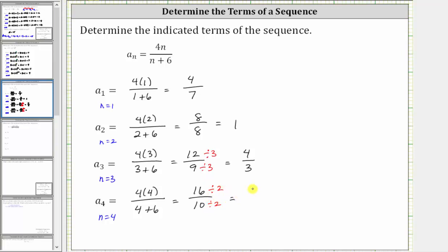16÷2 = 8, and 10÷2 = 5. The only common factor between 8 and 5 is 1, so this is now simplified. a_4 = 8/5.